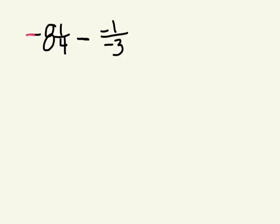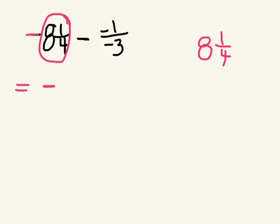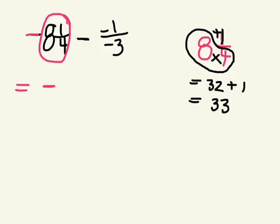The first number is negative, and then you have 8 and a quarter. We're going to rewrite it as an improper fraction, and the answer is going to be negative because it's a negative number. To turn 8 and 1 quarter into an improper fraction: multiply 8 times 4, which is 32, then add the numerator 1 to get 33. The denominator stays as 4, so this is 33 over 4 — and with the negative, it's negative 33 over 4.